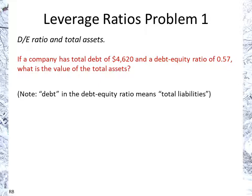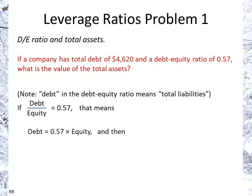Note that the debt in the debt equity ratio means the total liabilities. So if the debt to equity is 0.57, that means — by multiplying across — debt is 0.57 times equity, or equivalently, equity equals debt divided by 0.57.